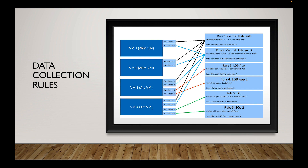Rule Two says 'send Microsoft Windows Events to Workspace B' — so now it's a different workspace you're utilizing, and virtual machines are associated with it. Data collection rules allow you to send logs to different workspaces, so you may have one team working in one workspace and another team in another workspace — they both need the data but will use it differently. I'll talk about managing access to Log Analytics Workspace tables in Part Four.